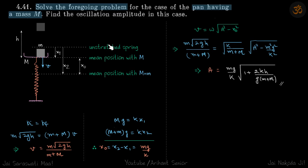These are the three important points: first is the unstretched spring, second is when the mass was still in the air where the mean position with just M was, and then for the combined system, the new mean position with M plus m. We're doing all this so we can find the value of x₀.